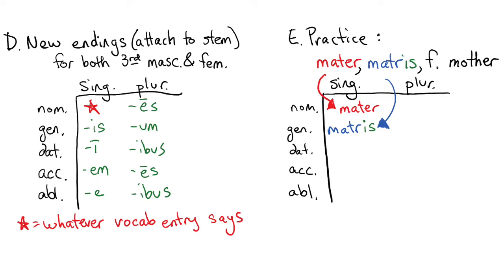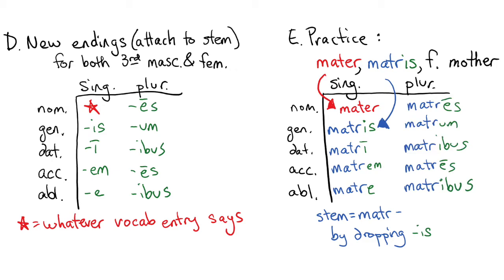Then, add the endings I-M-E-A-S-U-M-I-B-U-S-A-S-I-B-U-S, and we will get the forms matri, matrem, matre, matres, matrum, matribus, matres, matribus.